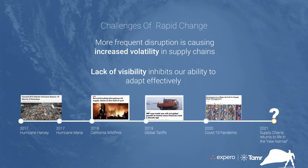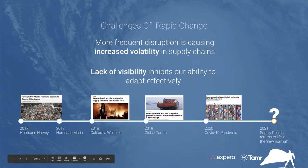Right now, everyone is very focused on COVID and the disruption that's happening. It is a kind of black swan event that we're all dealing with. But this disruption is not an uncommon occurrence. If we look back over the last few years, we see things happen with weather, politics, immigration changes — just constantly causing a state of disruption on supply chains that we have to deal with on a day-to-day basis.